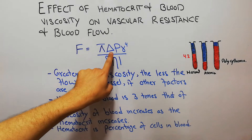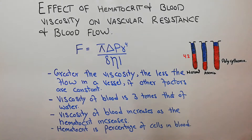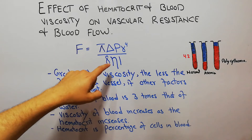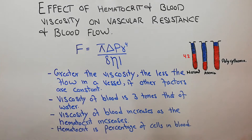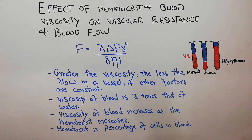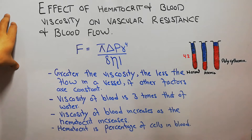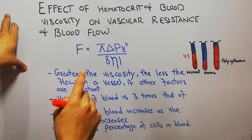We also discussed that the difference in pressure on both sides of the blood vessel is important for blood flow according to Poiseuille's law. Two other factors that affect blood flow are viscosity, represented by eta, and the length of the blood vessel. Today we are going to discuss viscosity and hematocrit and their effect on blood flow according to Poiseuille's equation.